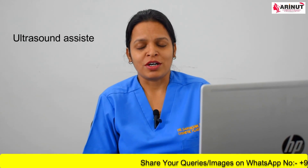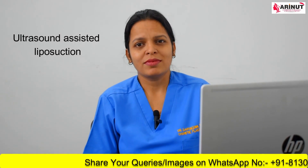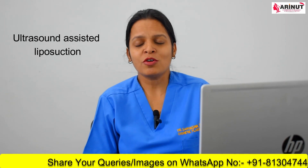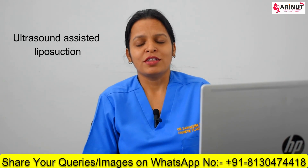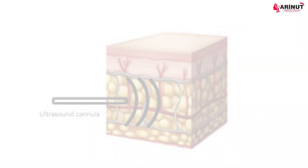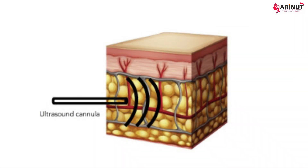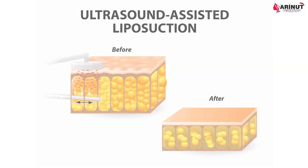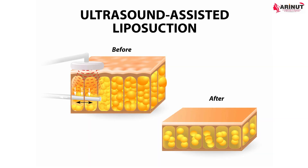When liposuction is done with saline injected, it is called tumescent liposuction. The next technique is ultrasound assisted liposuction. In ultrasound assisted liposuction, ultrasonic energy is used to break down the fat cells from your fat pocket, and once this is done using ultrasonic energy, the fat is sucked out.